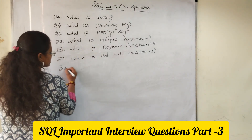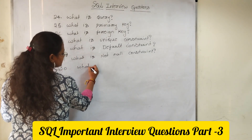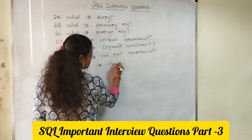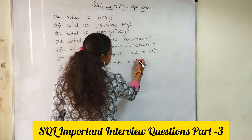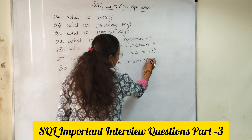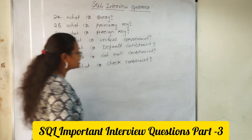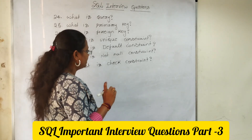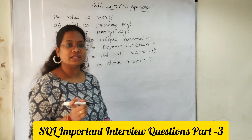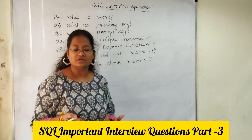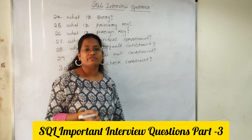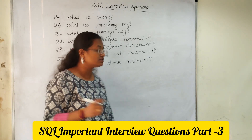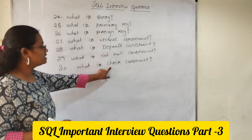And 30th question: what is check constraint? This is very very important. When you are going to give a range — for example, if the manager joined with a particular alphabet or the person joined in a department like 10, 20, 30 — we can use this check constraint.